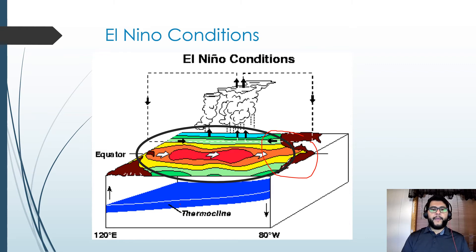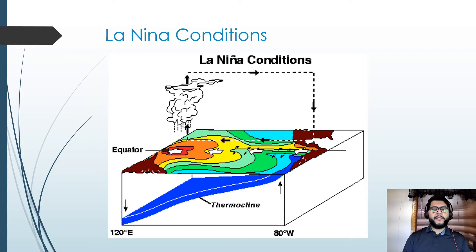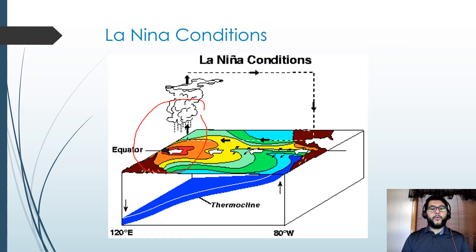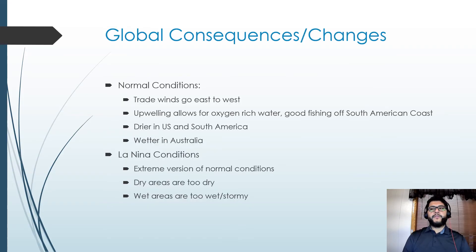Australia and areas to the west will end up with more drought during El Niño. La Niña is another condition that can occur — it's essentially like normal conditions but more extreme, with bigger storms in Australia and toward the west, while our side ends up with drier conditions and more upwelling occurring.